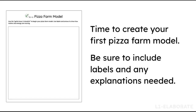In small groups, students will create their pizza farm models and labeled explanations on the pizza farm model student journal page. Provide students with colored pencils, markers, or crayons so they can use colors to identify features on their farm. You will then bring the class back together and use the student models to develop a class consensus model of the pizza farm that includes the key takeaways from the lesson. You will update this model throughout the unit.